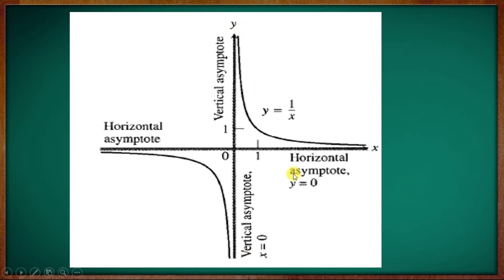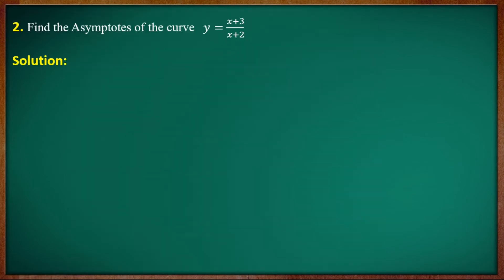To find vertical asymptotes, we look at where the denominator equals 0, giving x equal to 0. To find horizontal asymptotes, we look at y as x tends to infinity. Next question: find the asymptotes of the curve y equal to x plus 3 all divided by x plus 2.